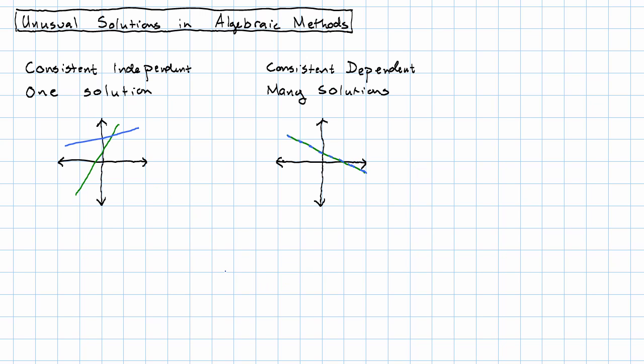we had consistent dependent systems with many solutions, in which our graph consisted of the same line drawn twice, and we had inconsistent systems with no solutions, in which the graph consisted of a pair of parallel lines that don't intersect anywhere.